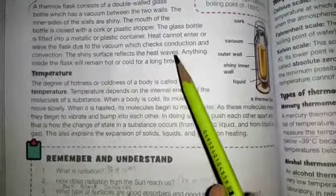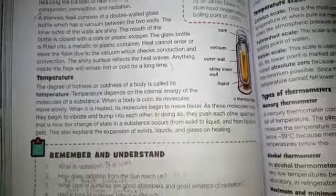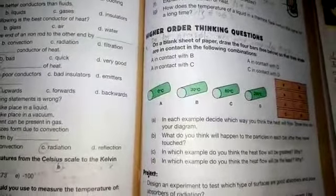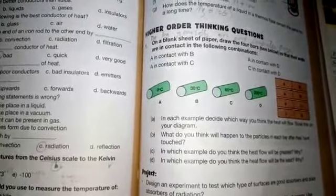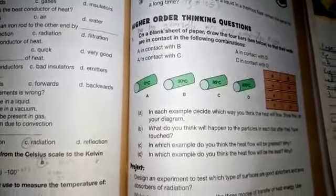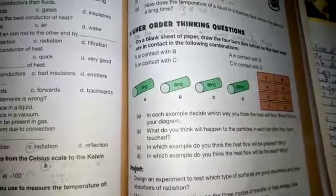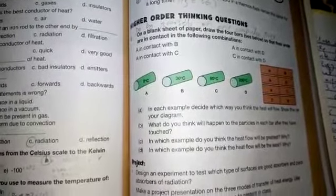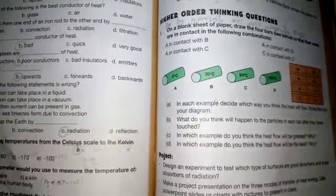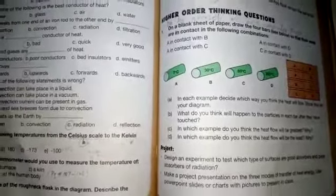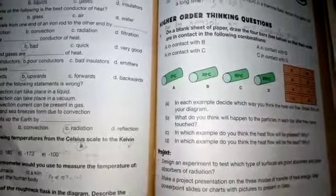The next is higher order thinking question. You have just one question. Read it carefully and do it by yourself on any notebook page. This is your self-assessment. Thank you, this is all. If you have any confusion, must ask me.